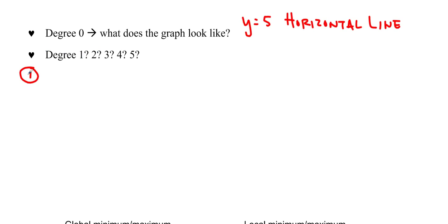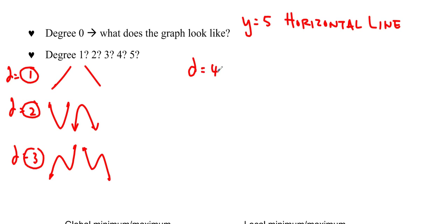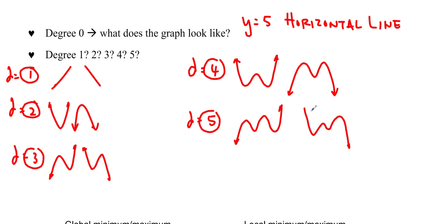Degree one is the line — it could be a positive slope or a negative slope. Degree two is the quadratic — opening upwards or downwards. Degree three is the cubic — it looks like a one-hump camel facing one way or the other. Degree four looks like a saggy butt shape or a mountain facing the other way. And degree five is like a two-hump camel — it's got two humps and then goes up, or facing the other way. These humps can be higher or lower depending on the function.